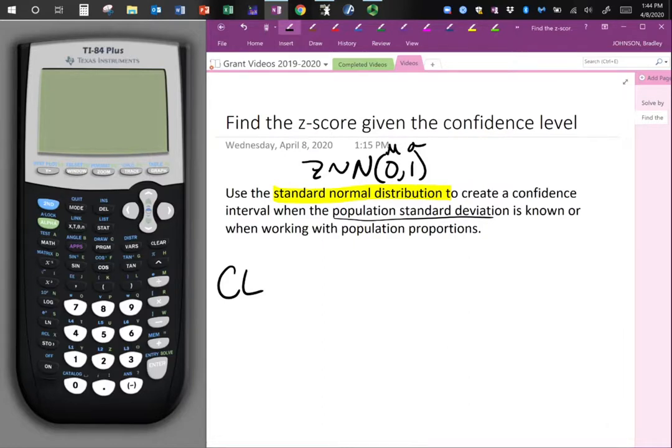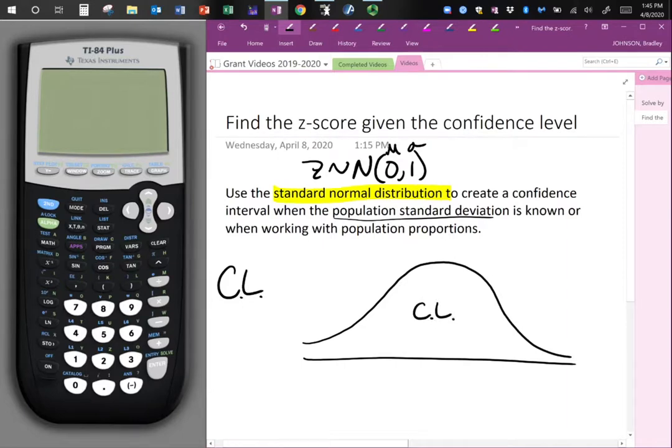Now we need to find the z-score, but how does the confidence level relate to a normal distribution? Well, I'm going to draw a picture to demonstrate this. Our confidence level, our CL, is what we're going to denote in the middle portion of our curve. The confidence level is actually the area in the middle, and we know area under the curve represents probability when you're going back to the normal distribution.